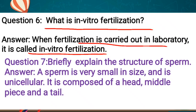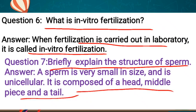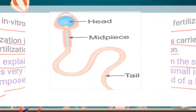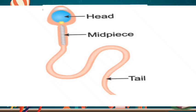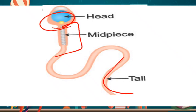Question number 7: Briefly explain the structure of sperm. Yeh bahut important question hai, exam mein kai baar puchha jaata hai, aur diagram ke saath dikhana hai. Answer: A sperm is very small in size and is uninuclear, means ek nucleus hota hai. It is composed of a head, middle piece, and a tail. Tail movement karne mein help karti hai.